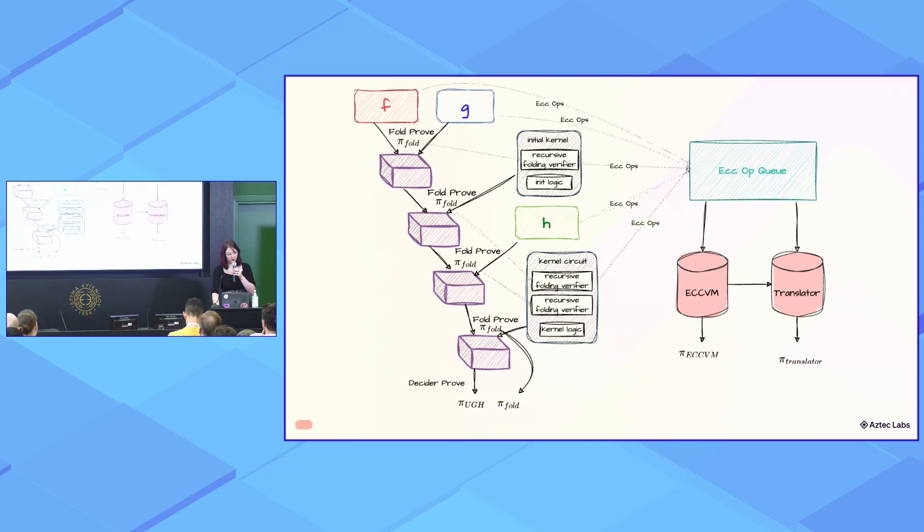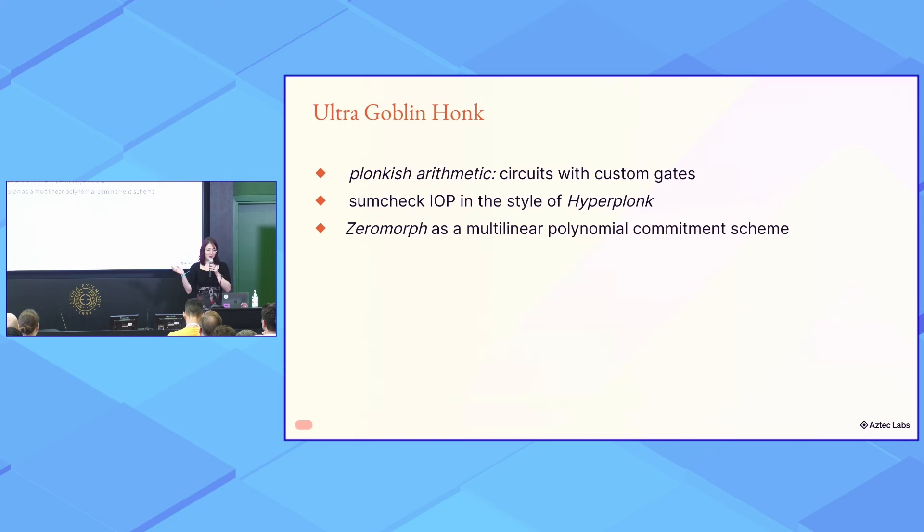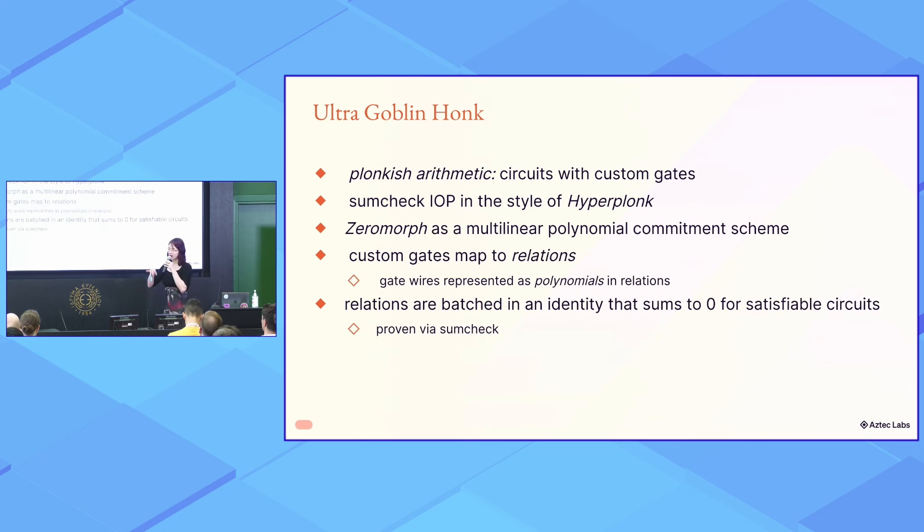So, what do we prove with? We prove with something called Ultra Goblin Honk. Which is plonkish arithmetic. So, we have circuits with custom gates. We have a sumcheck IOP in the style of hyperplonk. And we use zero morph as the multilinear polynomial commitment. And basically, what we do in the proof system, we map custom gates to something we call relations. And the wires in the custom gates are represented as polynomials in these relations. And relations are batched in an identity that needs to sum to zero for a satisfiable circuit. And this is proven by a sumcheck.